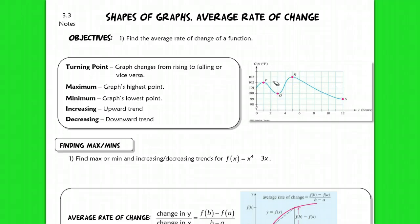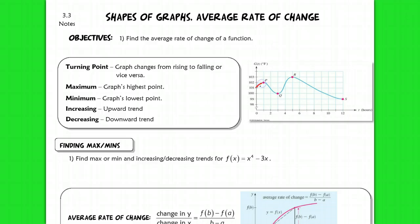Your maximum of a graph is your graph's highest point, so our max here would be at point R. Our minimum, of course, would be our lowest point, so like point S. Increasing is where you have an upward trend in your graph — we've got a couple increasing trends here. From the interval 0 to 1 it's increasing, and from Q to R it's also increasing. A decreasing part is where you have a downward trend in your graph, so from P to Q and from R to S.